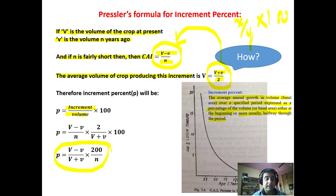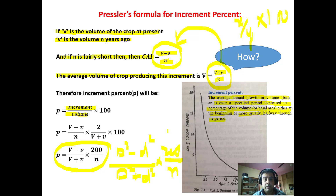If we express the same formula in terms of diameter — since volume and diameter have a square relationship — we write: d squared minus small d squared upon d squared plus small d squared into 200 upon n. This form will be used in the next slides.